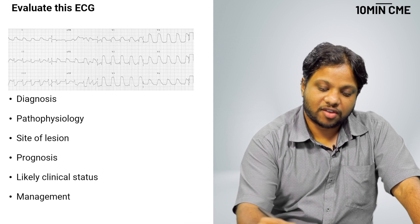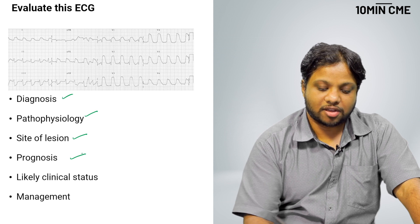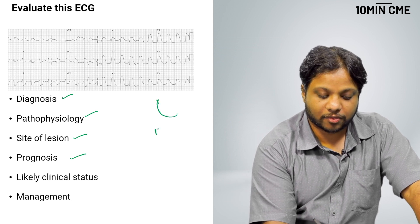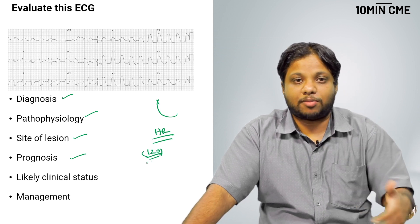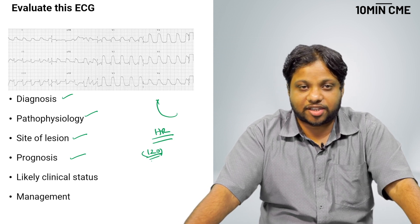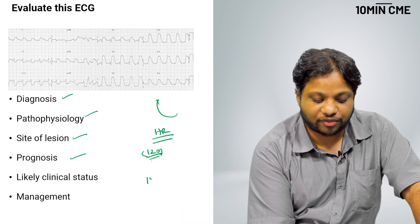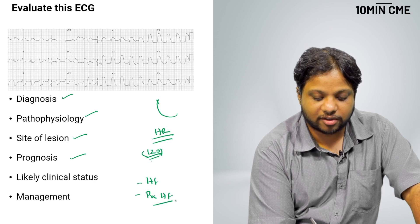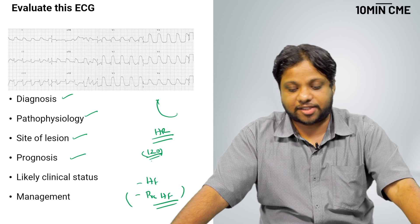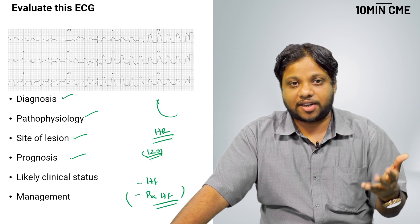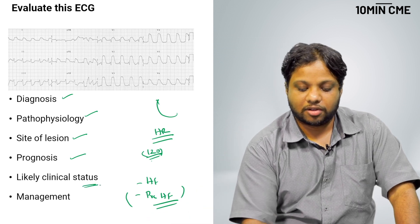We have established diagnosis, pathophysiology, site of lesion and prognosis. Likely clinical status. I want you to see the heart rate. Heart rate is somewhere around 120. Whenever you have an anterior wall MI with tachycardia, especially you have proximally grade 3 ischemia, it automatically signifies that this person is probably in heart failure or pre-heart failure. This patient is probably going to become sicker. This is the patient where you auscultate for an S3. Tachycardia and anterior wall MI, always think that this patient might be in heart failure or pre-heart failure.